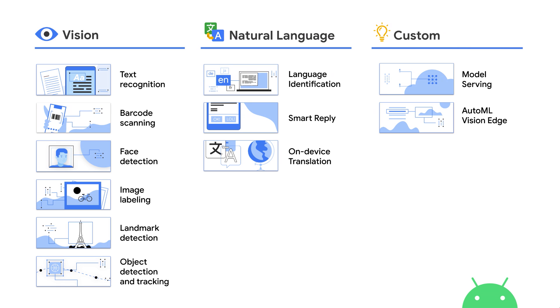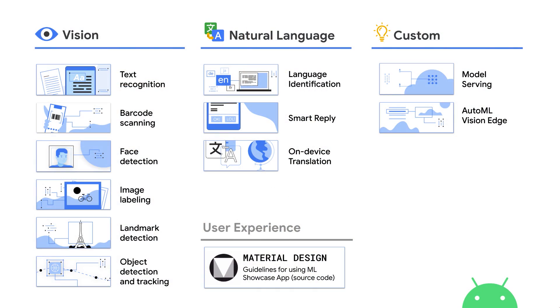In the vision category, we added one more API called Object Detection and Tracking, which is my personally favorite feature. We worked with the Material Design team to create UX guidelines for on-device ML workflows. Our showcase app adopted this guideline, and we open-sourced it on GitHub, so feel free to grab it and check it out.